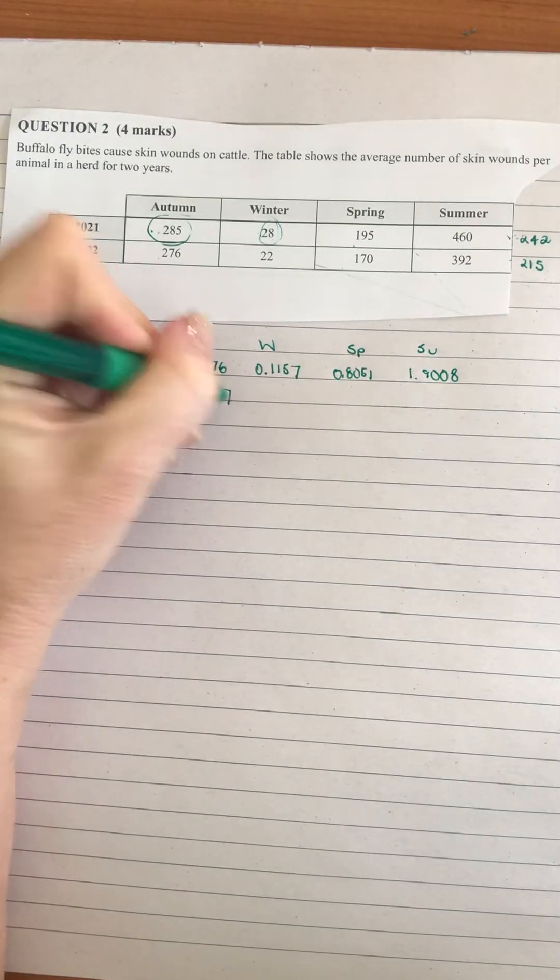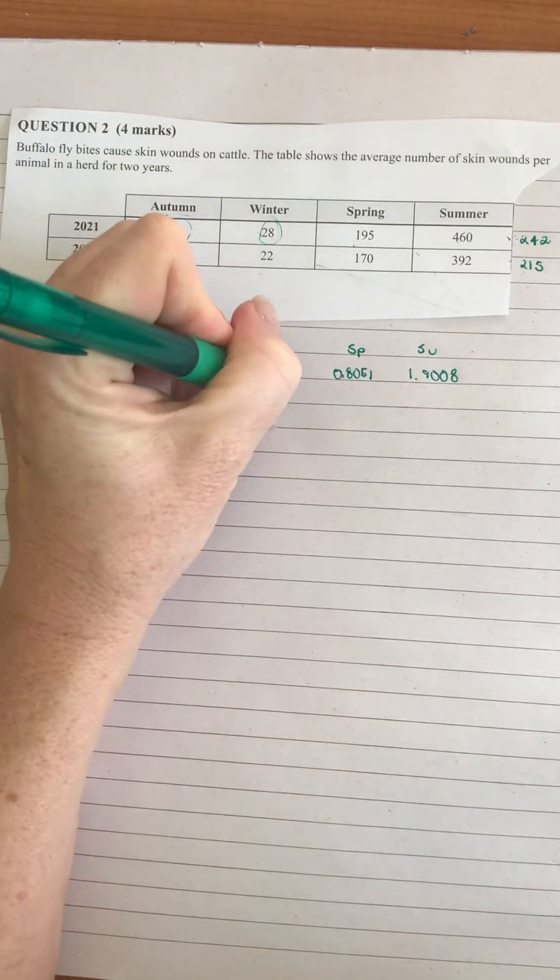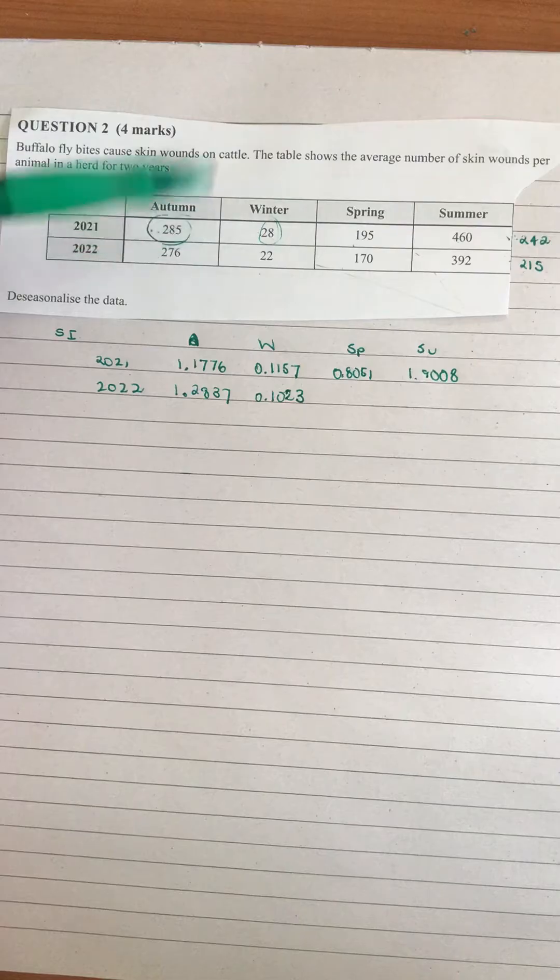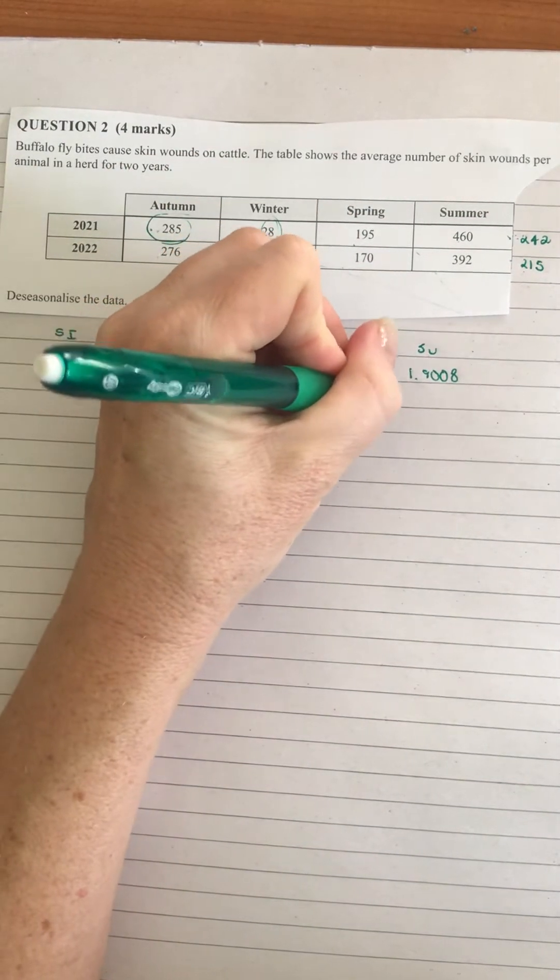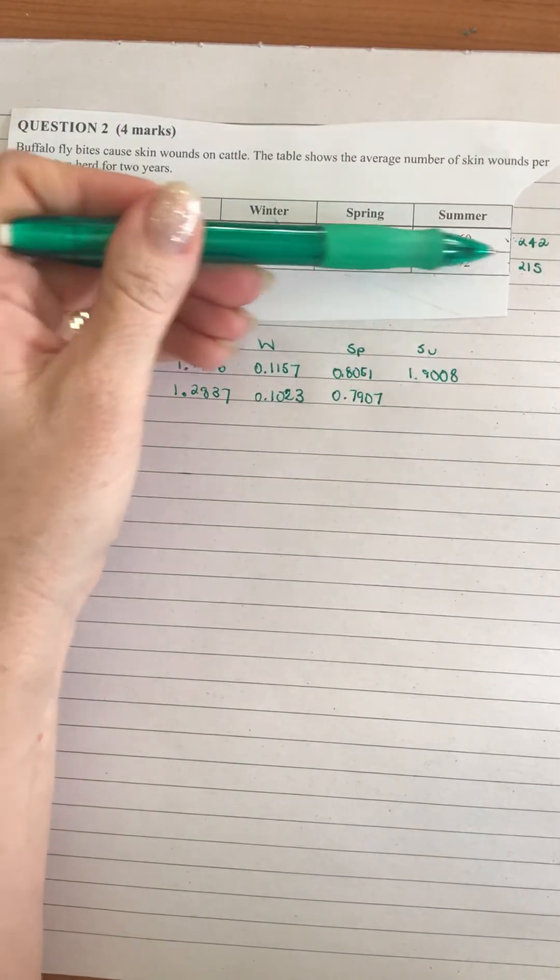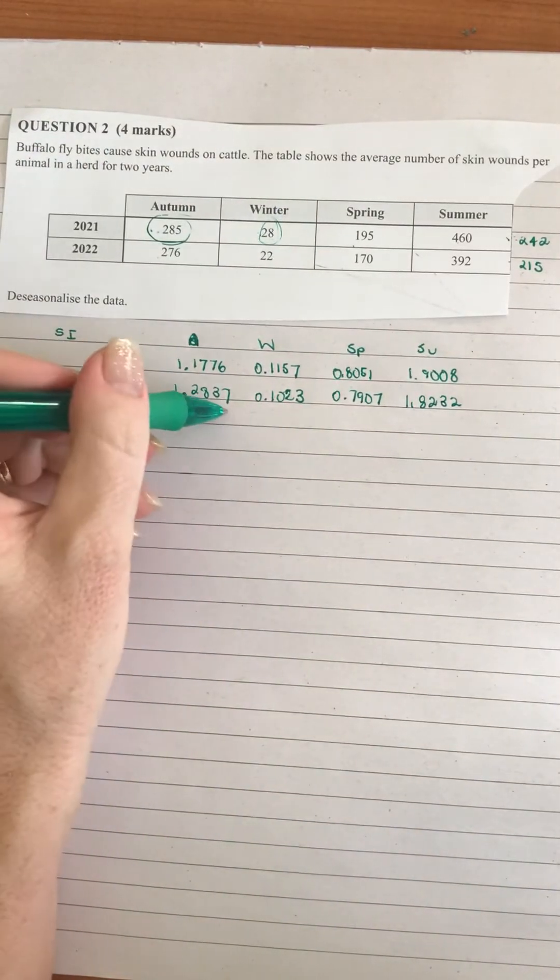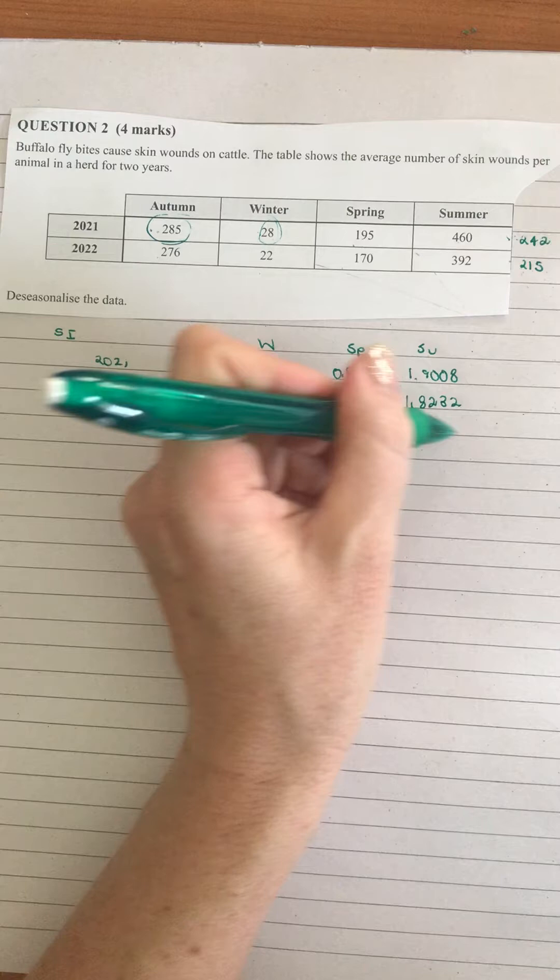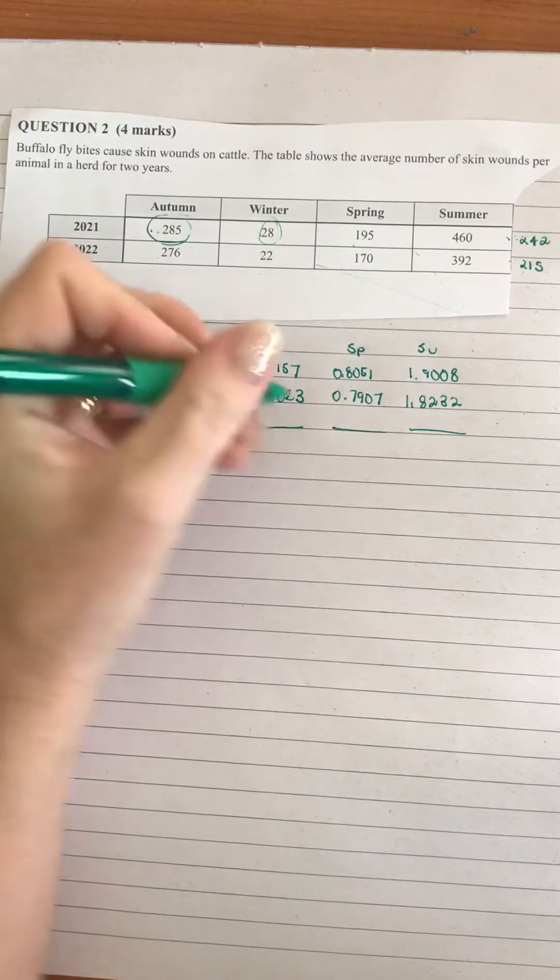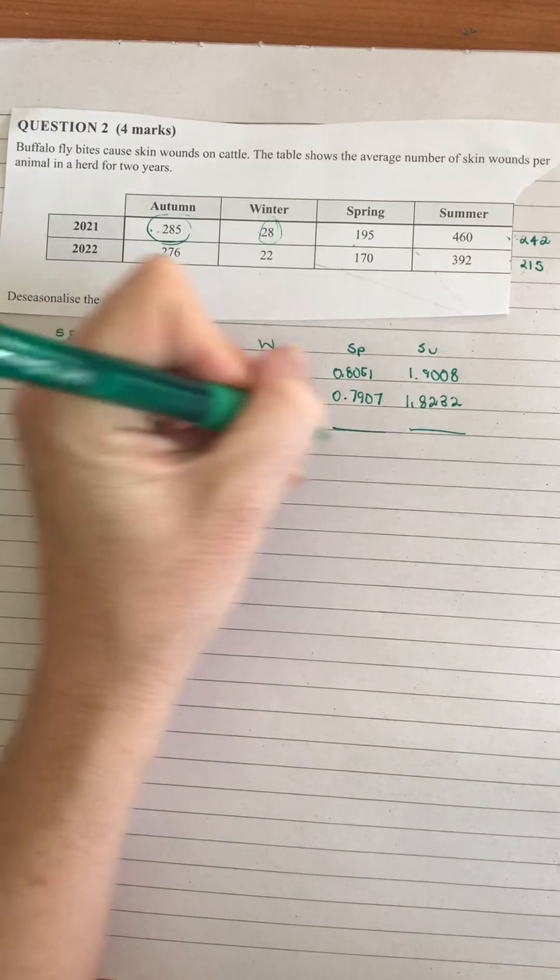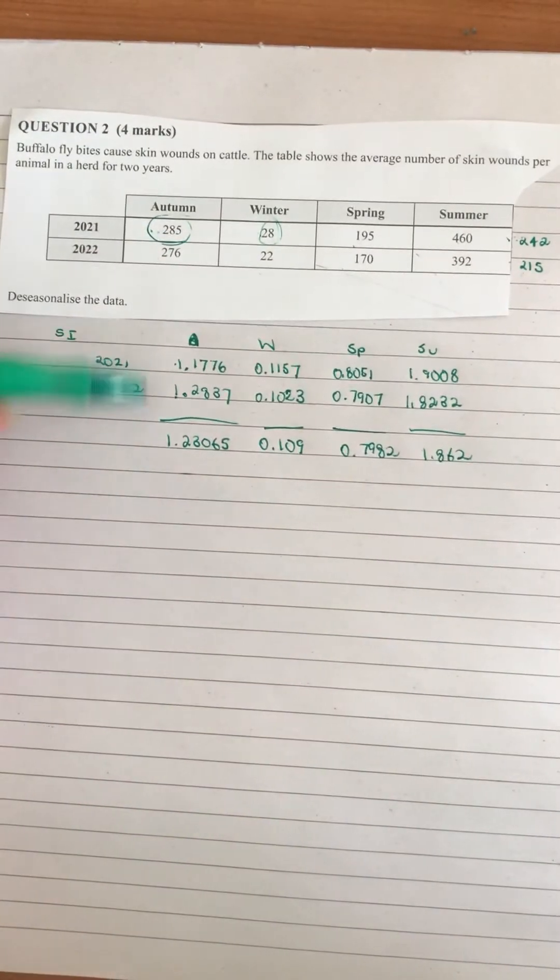For 2022, when we do 276 divided by 215 we get 1.2837. When we do 22 divided by 215 we get 0.1023. When we do 170 divided by 215 we get 0.7907, and when we do 392 divided by 215 we get 1.8232. Then we want the averages of each of those, so we're going to add the two together and divide by 2. We get 1.23065, we get 0.109, we get 0.7982, and we get 1.862.